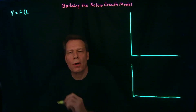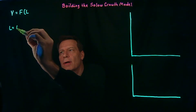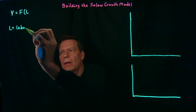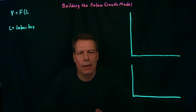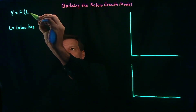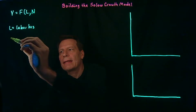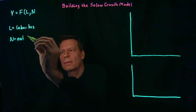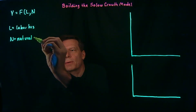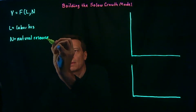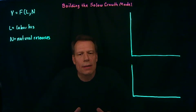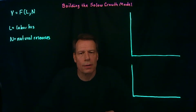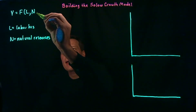The first variable we're going to call L, where L simply stands for labor hours — how many hours of labor are actually available in this economy. Next, we're going to add N, where N stands for natural resources: the land, the water, the air, and what's underneath the land — minerals, oil, gas, gold, and so forth.